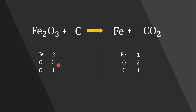If we add coefficient two in front of ferric oxide, the number of oxygen atoms in our reactant side becomes six — you can get this by multiplying the subscript of oxygen by the coefficient. Likewise, if we add coefficient three in front of carbon dioxide, our oxygen atoms in the product side also become six. Now oxygen on both sides is equal, but be careful — iron and carbon atoms are still not balanced. The number of iron atoms has become four because of the coefficient two in front of ferric oxide.